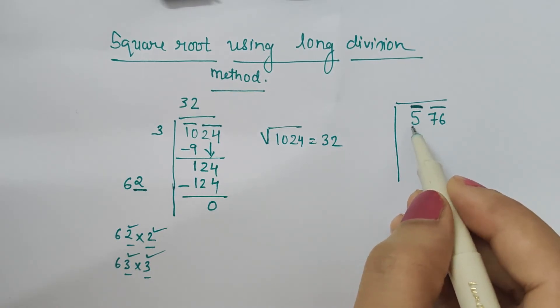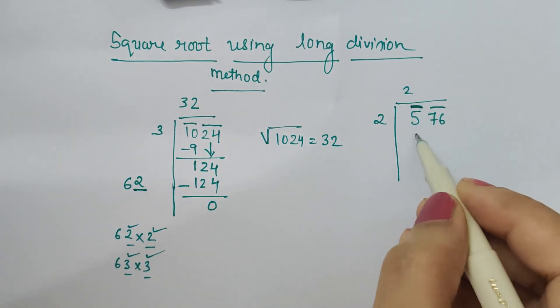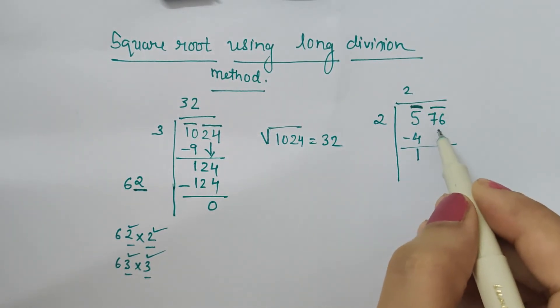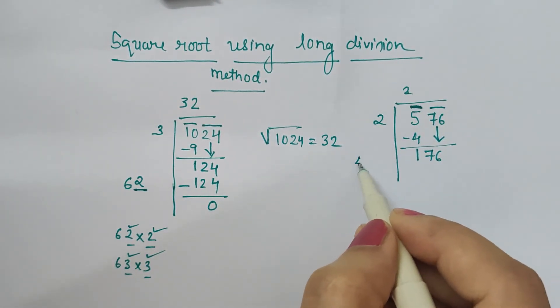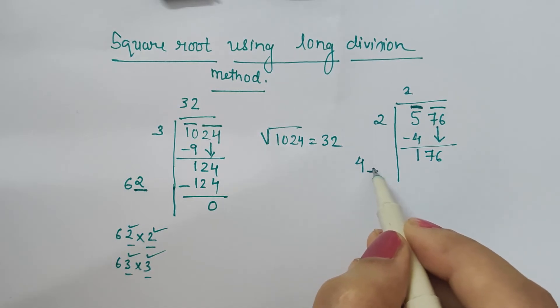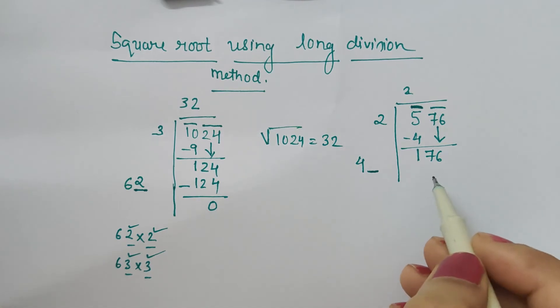Nearest perfect square is 4: 2×2 is 4, and 1 is the remainder. We bring down 76. The double of 2 is 4. Now we have to check for 41×1, 42×2, and so on.